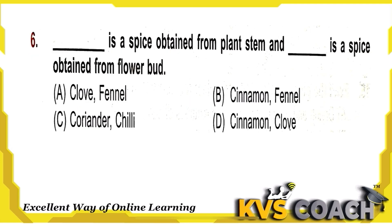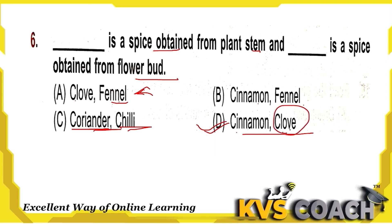Question 6: Dash is a spice obtained from the plant stem, and dash is a spice obtained from a flower bud. Which spices are obtained from plant stem and flower bud? Looking at the options — cinnamon is obtained from the plant stem and clove is the flower bud. So option D — cinnamon and clove — is the right answer.